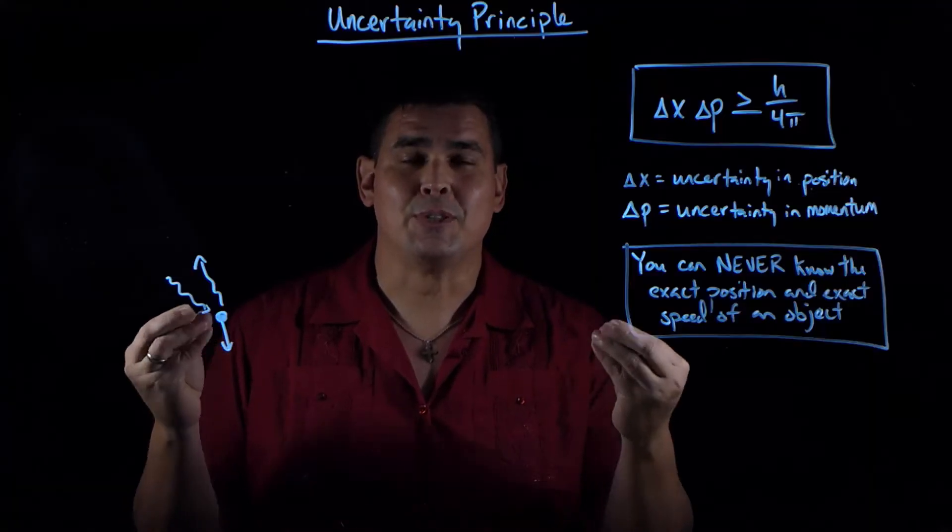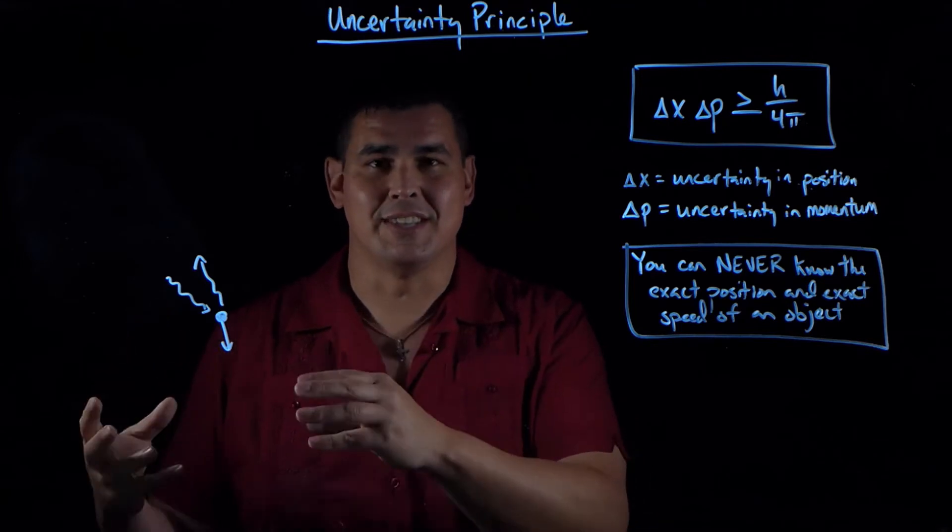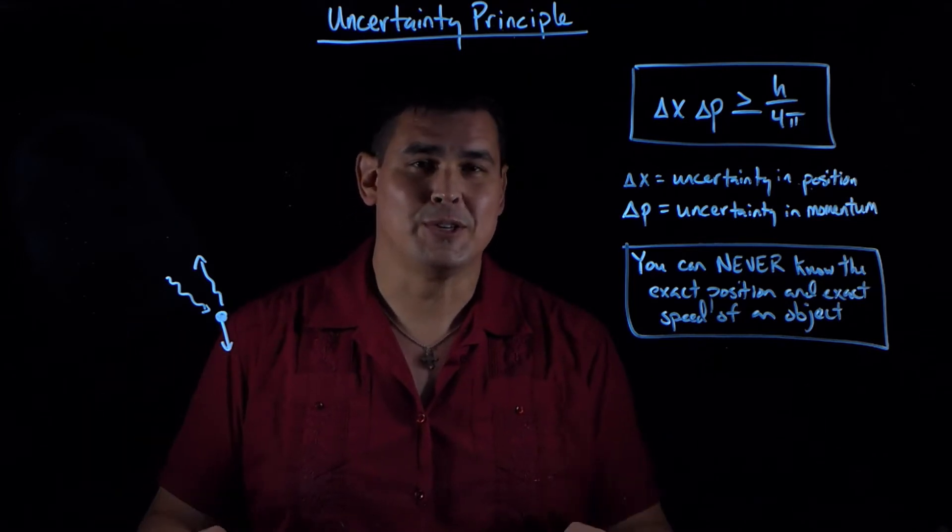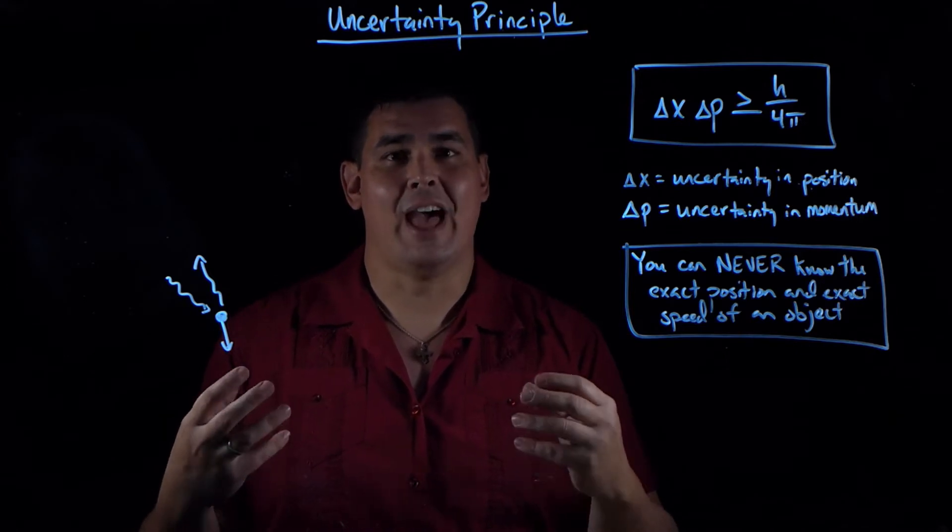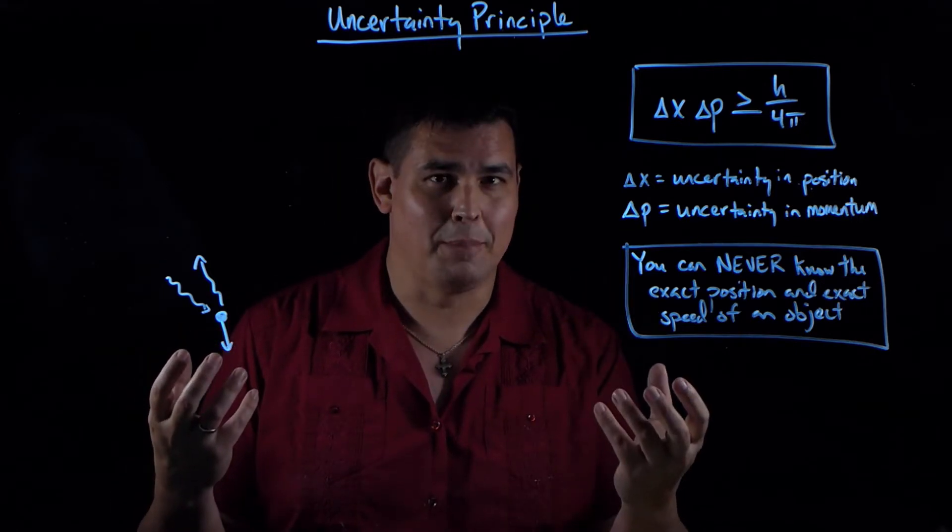Yes, it's kind of an example. Even Heisenberg used this example in his paper in 1926. But the uncertainty principle is so much more fundamental than just this. At its core, the uncertainty principle gets at the idea that things on an atomic scale have both particle properties and wave properties.